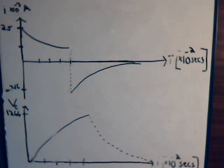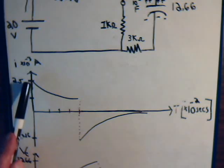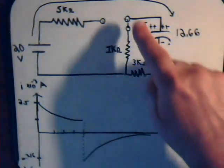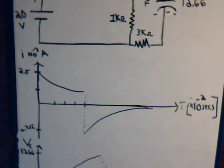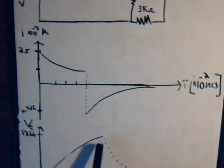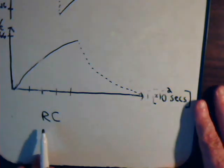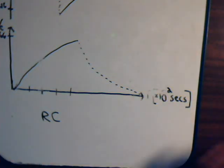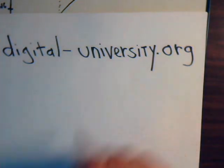To summarize: during charging the current goes from 2.5 down to a little over 0.9 milliamps; when we throw the switch it instantly becomes minus 3.16 milliamps and then falls off to zero. During charging the voltage climbs to 12.66 volts, and when we throw the switch it decays back to zero. In the next video we'll talk more about the time constant for both capacitors and inductors — that should be video number 68. The playlist for all the videos is at digital-university.org.